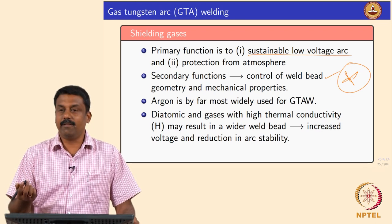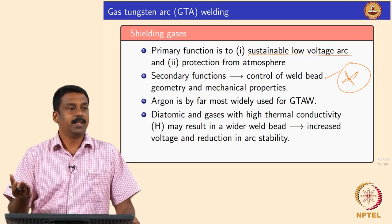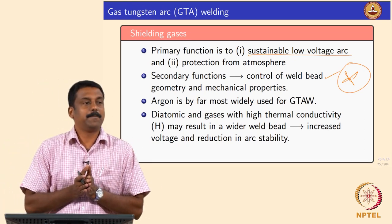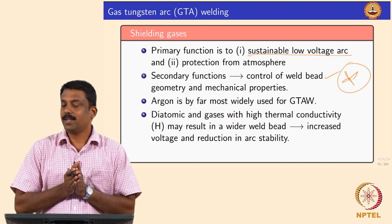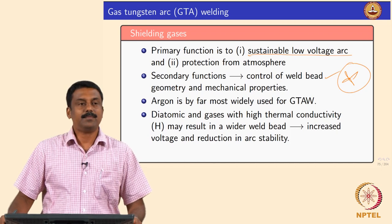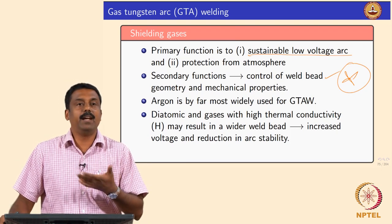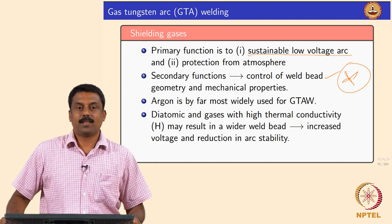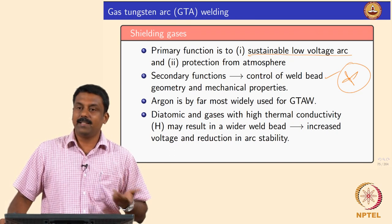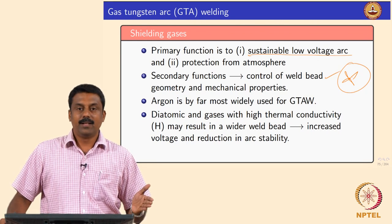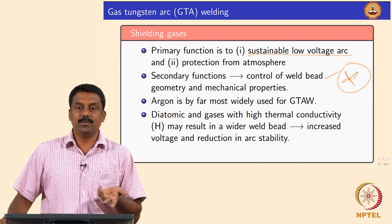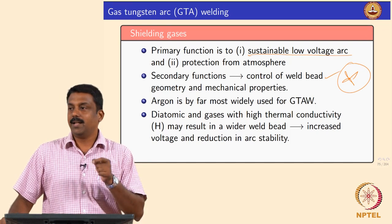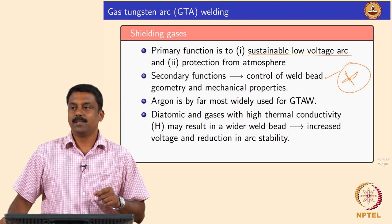Similarly, if you use gases with high thermal conductivity the same phenomenon can occur — for example, hydrogen or helium. Helium is a highly convective gas; the buoyancy flow is very high with helium or hydrogen, so the heat can be transferred very effectively, resulting in a much wider weld because the heat is spread. So you need to look at the physical characteristics of the gas plus the physics of the arc to understand what gas to use for a given application.